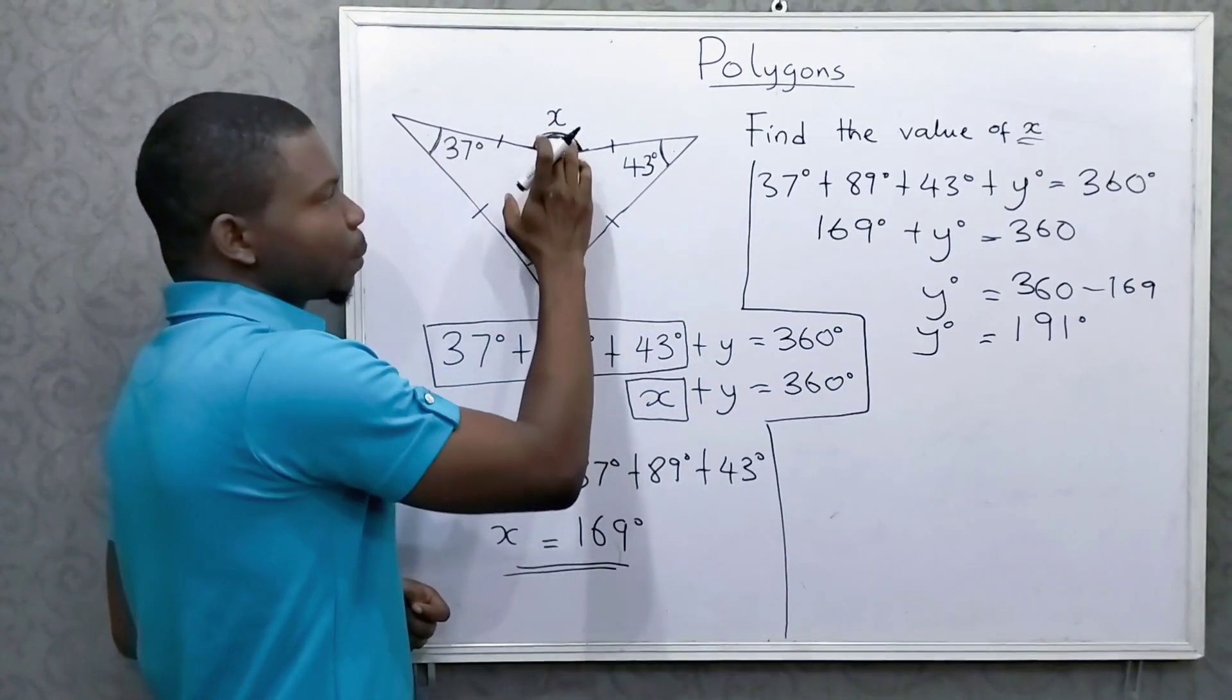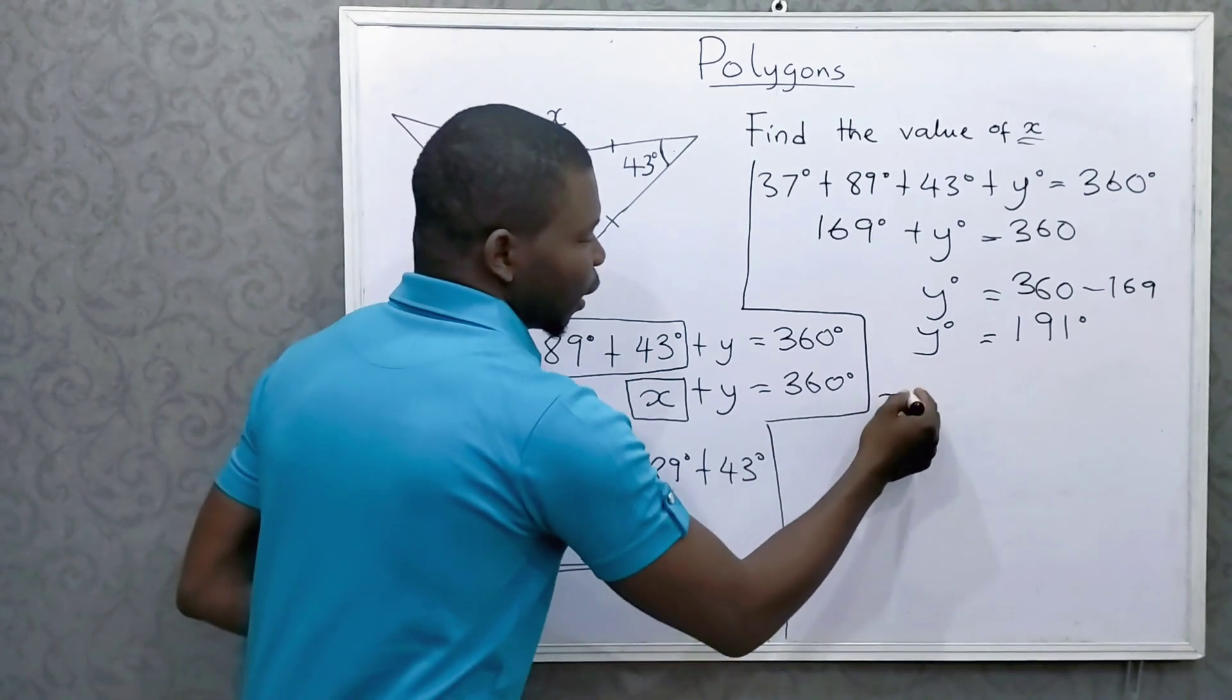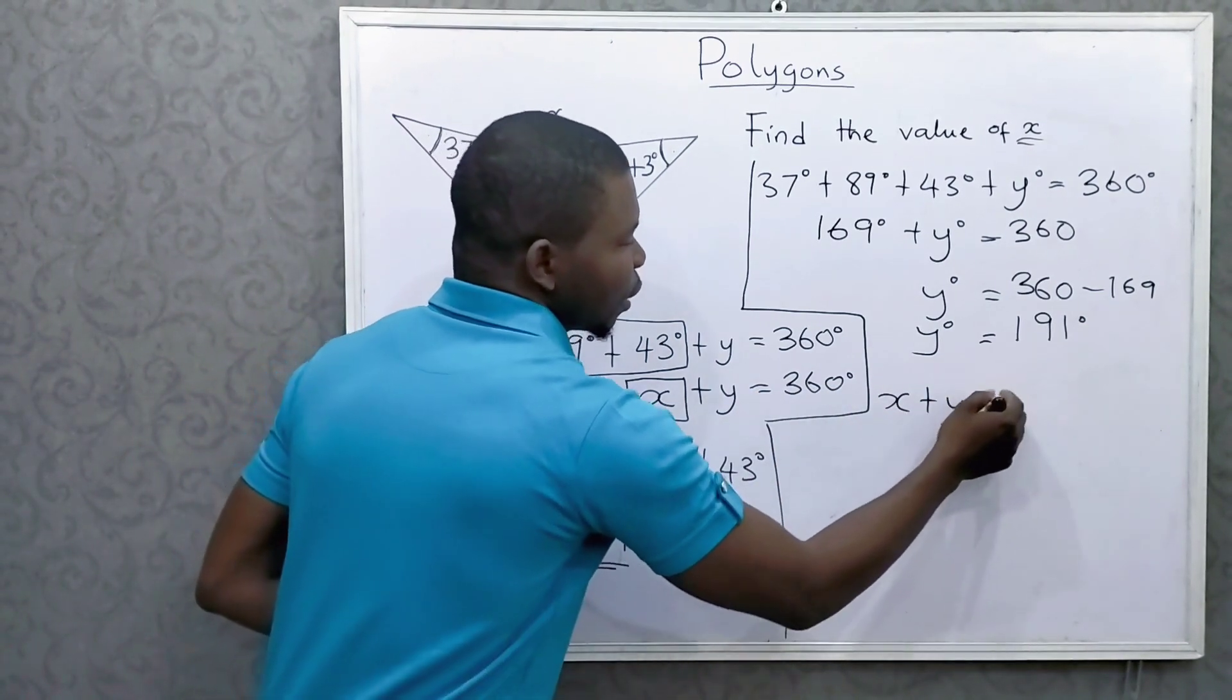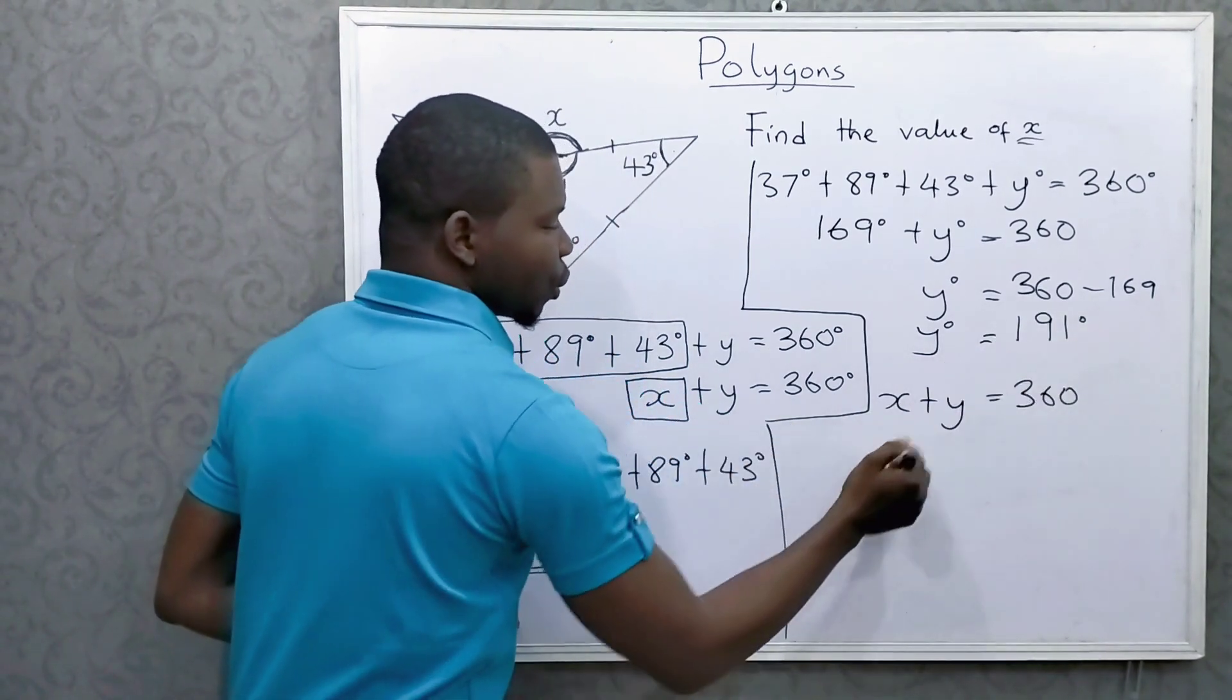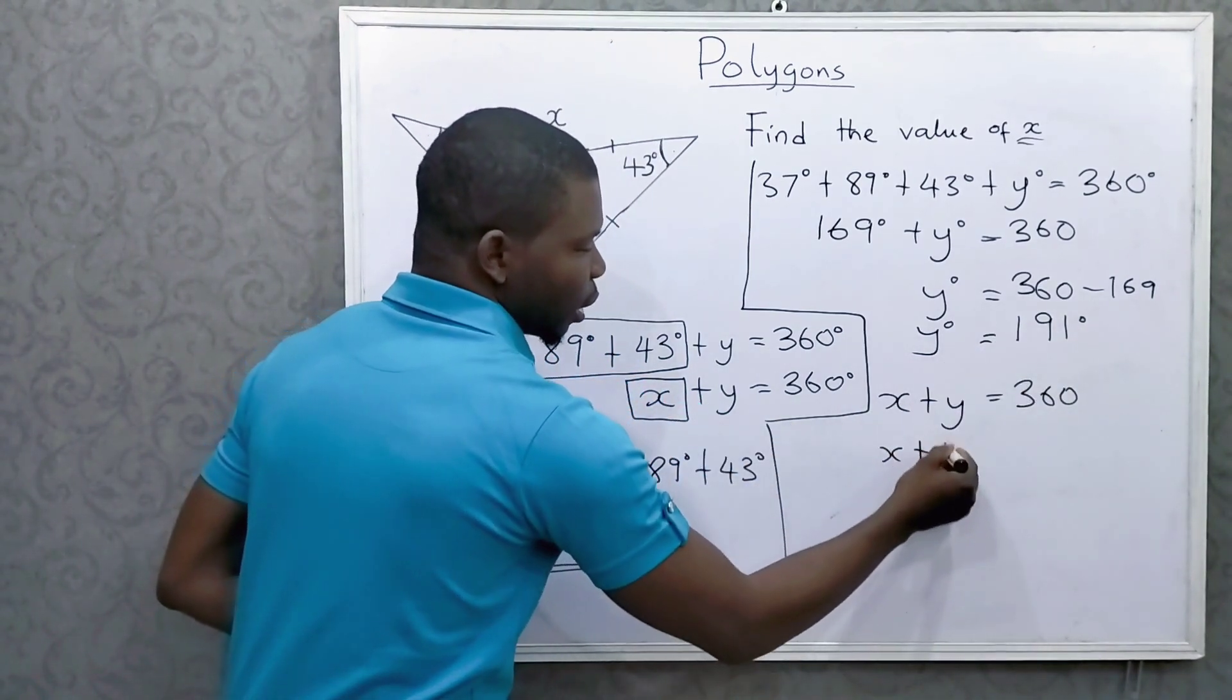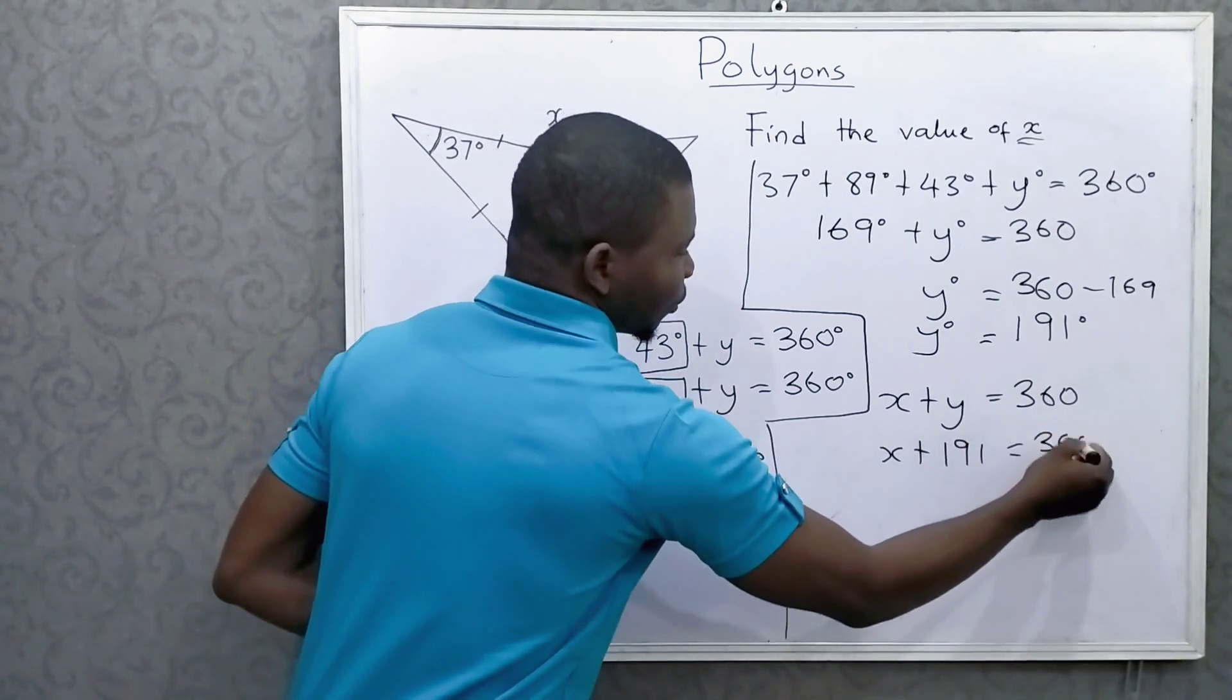But you know that x plus y is 360. That is angle at a point. x plus y is equal to 360. We already know what y is. So I'm going to substitute that. x plus 191 is equal to 360, right?